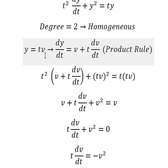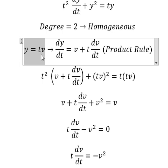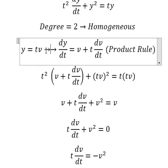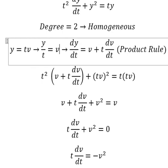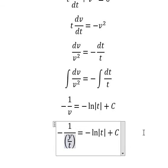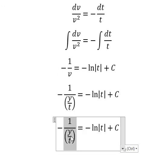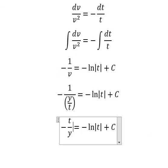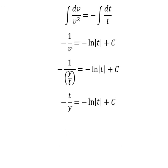Since v = y/t, we substitute this back into our equation. This gives us -1/(y/t) = -ln|t| + C, which simplifies to -t/y = -ln|t| + C. This is the final answer. Thank you for watching.